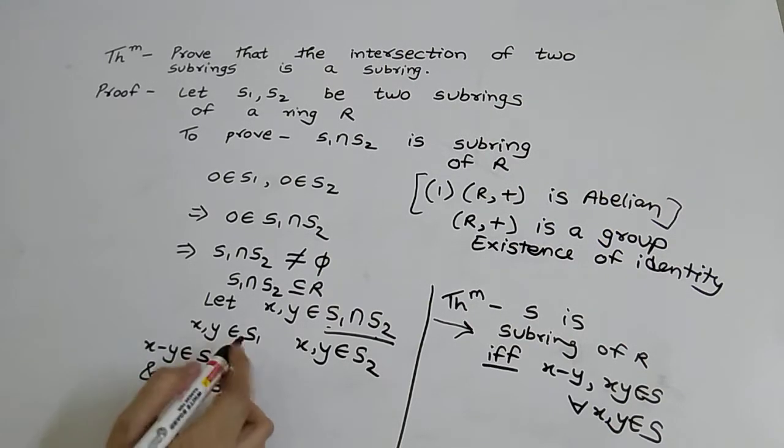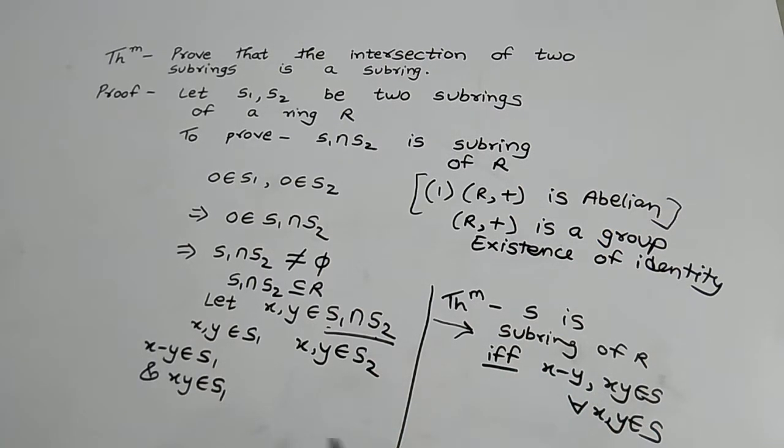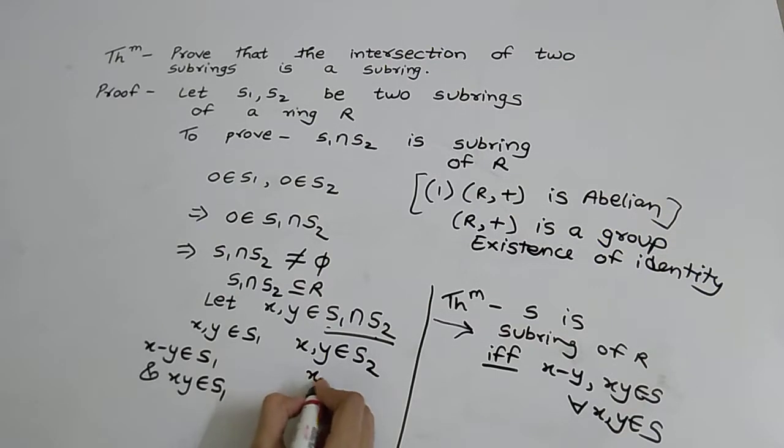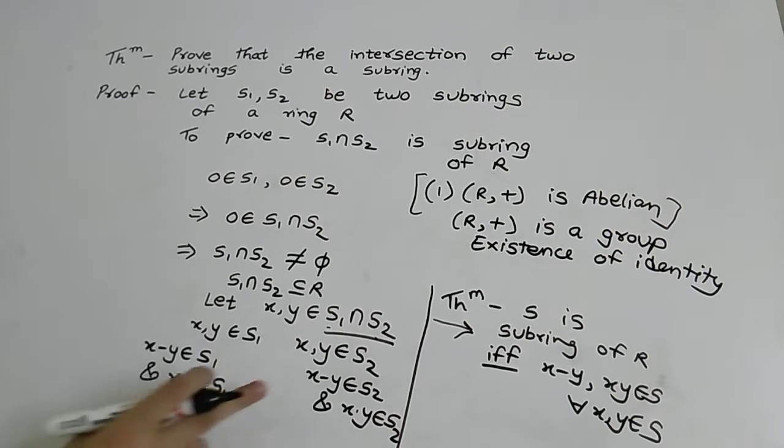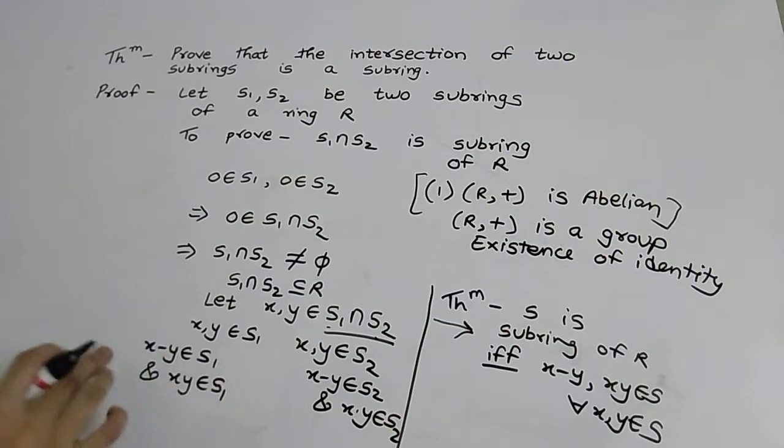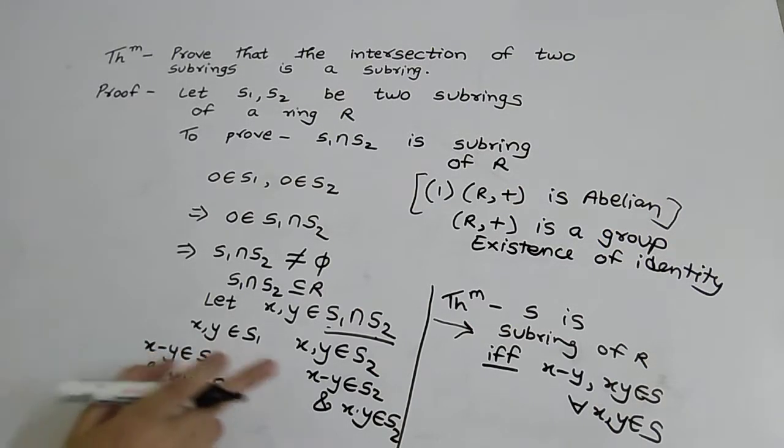Why? Because S1 and S2 are subrings of R, so this condition will satisfy. Similarly, x minus y belongs to S1 and x into y belongs to S2. So x minus y and x into y belongs to both S1 and S2.